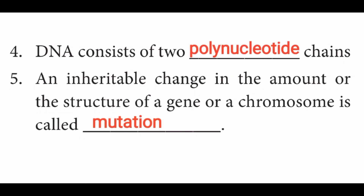Fourth question: DNA consists of two dash chains. Answer is: polynucleotide chains. DNA has two polynucleotide chains. A nucleoside is nitrogen base plus sugar, and a nucleotide is nucleoside plus phosphate.